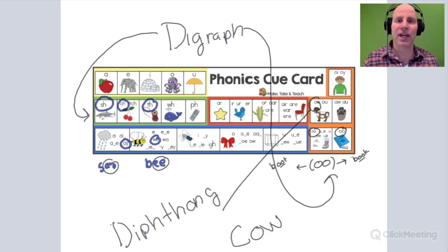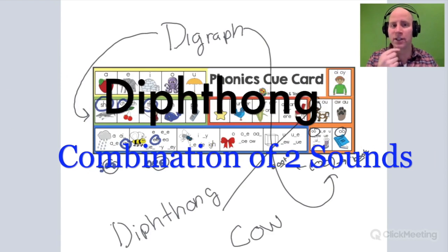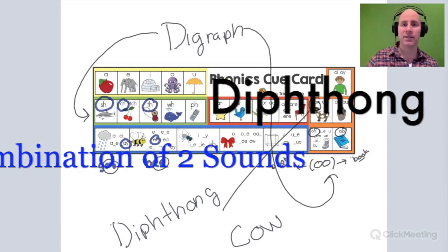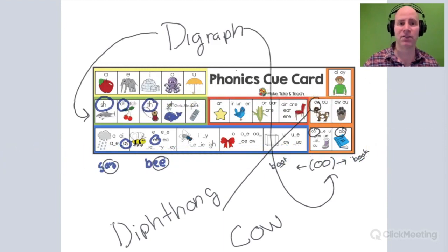So a digraph, like SH in shark, SH, there's no movement in the jaw, the tongue, the throat. But in a diphthong, like OW in cow or OY in boy, you'll notice there's OY or OW. There's an adjustment in the jaw, the tongue, the throat. This is the difference between a digraph and a diphthong.